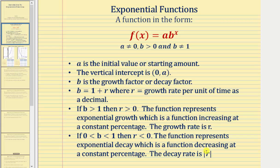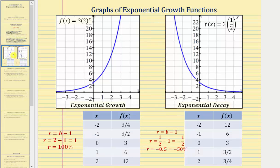Now let's take a look at exponential growth and decay graphically. Here we have the graph of f of x equals three times two raised to the power of x. Notice how the base b is greater than one, and therefore we have exponential growth, meaning as x increases, the function values also increase.